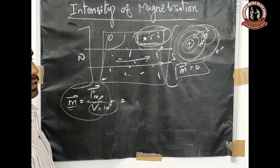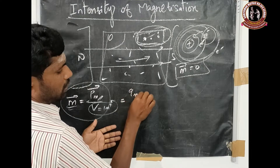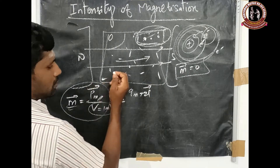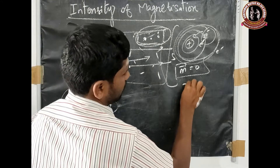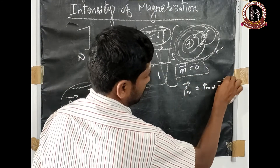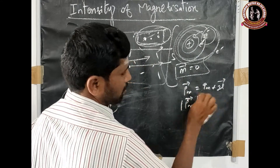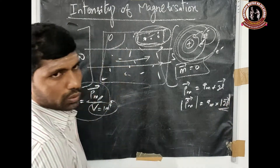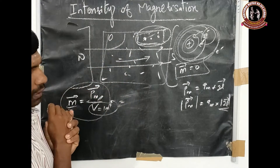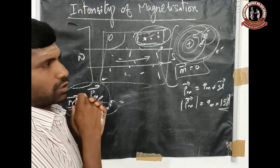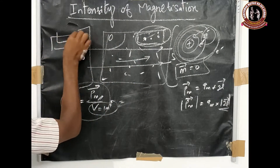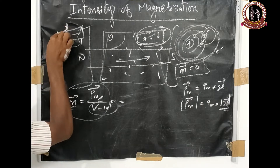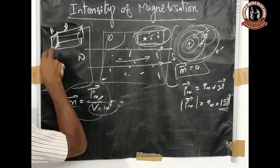Now let's substitute the bar magnet model. The magnetic dipole moment formula is P vector = qm × 2L vector. Consider a bar magnet of length 2L with cross-sectional area A. The total volume is A × 2L.